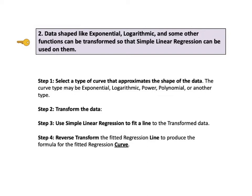Here is the 4 step procedure that accomplishes simple non-linear regression. Most statistical software will do this for you. Step 1, select a type of curve that approximates the shape of the data. Step 2, transform the data to transformed data that will approximate a line. Step 3, use simple linear regression to fit a line to the transformed data. Step 4, reverse transform the fitted line to produce the formula for the fitted regression curve. We illustrate this step by step in the slides that follow.